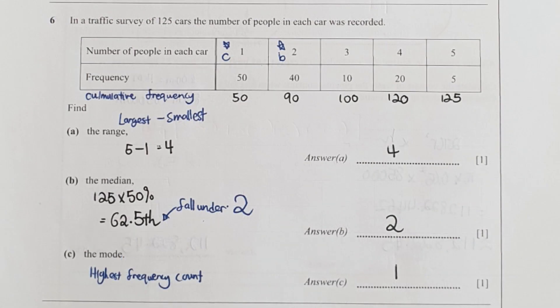Next part, find the range. Range means taking the largest minus the smallest. Do take note that you don't take the frequency to run the calculation. Take the largest amount of people in each car minus the smallest one, so the range will be 4.